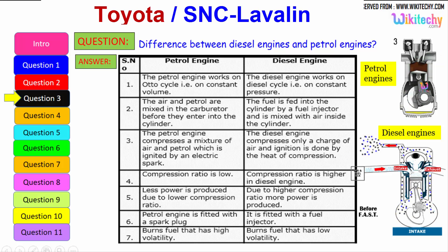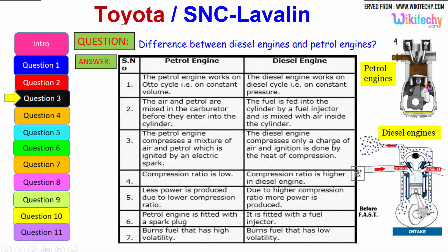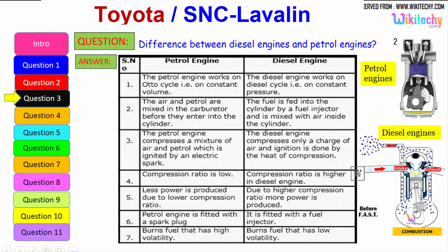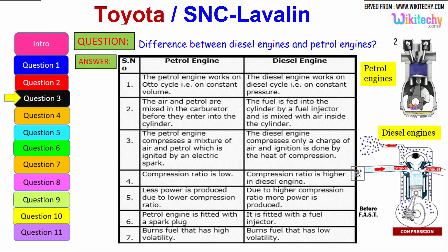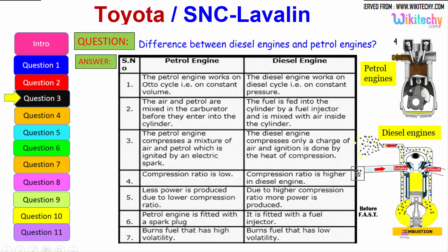The petrol engine has a lower compression ratio, so less power is produced, whereas the diesel engine has a higher compression ratio and more power is produced. The petrol engine is fitted with a spark plug, while the diesel engine is fitted with a fuel injector. The petrol engine burns fuel with high volatility — petrol is highly volatile — whereas the diesel engine burns low volatility liquid; diesel is a low volatile liquid.